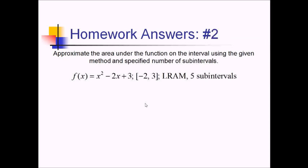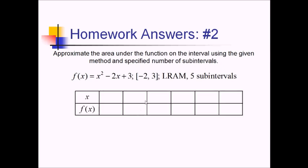On this problem, I want to approximate this quadratic from negative 2 to 3 using LRAM over 5 subintervals. Since I'm doing 5 subintervals from negative 2 to 3, these are just going to be going by ones. So I need a table with 6 values in it. We're going to start at negative 2, go to negative 1, then 0, 1, 2, and 3.